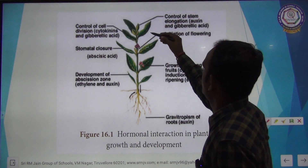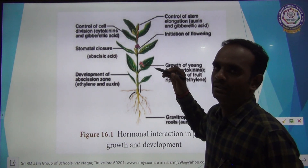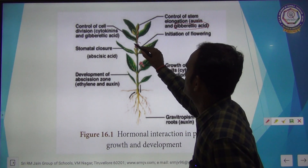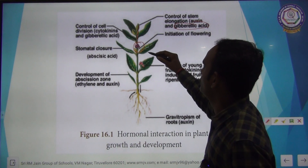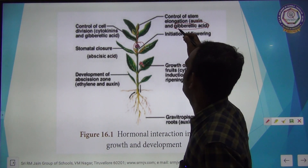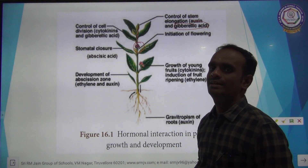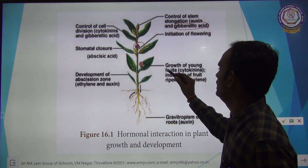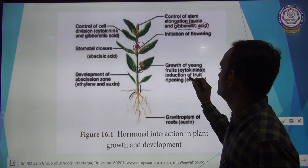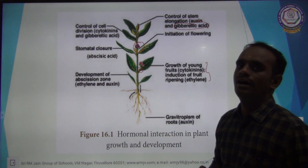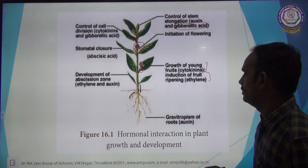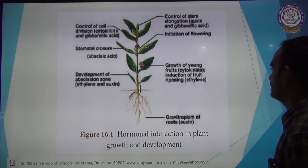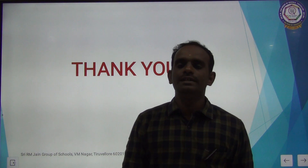The elongation of stem and growth of the plant is controlled by gibberellin. The initiation of flowering, growth of fruits, and growth of plants are all controlled by auxins, gibberellins, and cytokinins. The growth of the young bud is mainly due to auxins. This is the hormonal interaction in plant growth and development. Thank you children. We will see you in the next class.